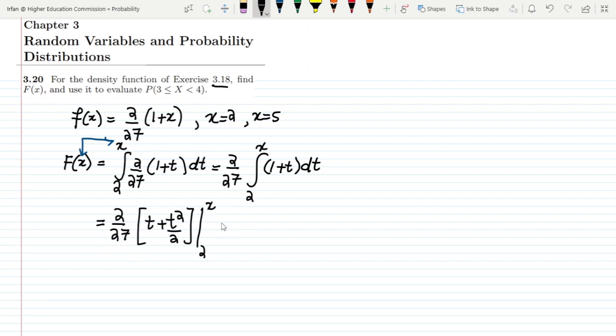Now after putting these values what I will get, you can simplify it and at the end what you will get is (x - 2)(x + 4) whole divided by 27. This is basically the capital F(x) which I wanted to find out and this is basically the CDF which we have.